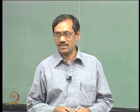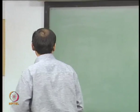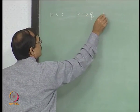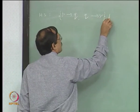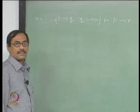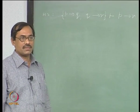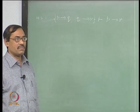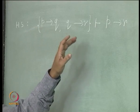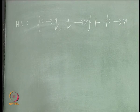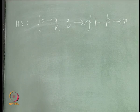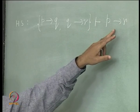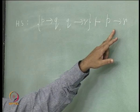For example, we have proved Hypothetical Syllogism (HS) in the last lecture. HS says that p implies q, q implies r, entails p implies r. This is what hypothetical syllogism says. We have proved this consequence. Now, once you see that this is a consequence scheme, that means you substitute any other propositions in place of p, q, r — whatever you get, that is also provable.